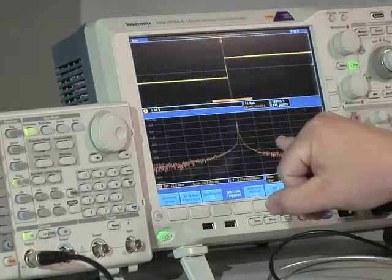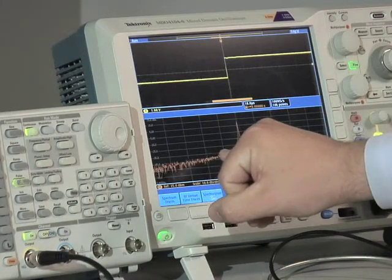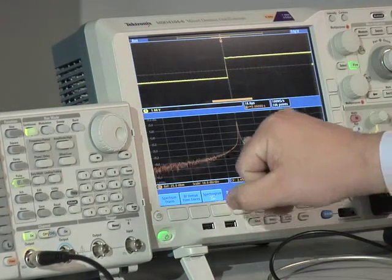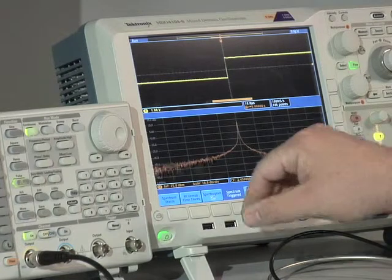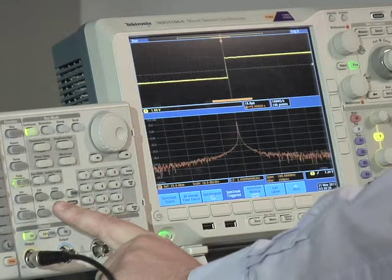And so now what we're looking at is the spectral purity of the power amplifier. So you can see the impact of the rising edge of that pulse and the consequences of that, that we have some spectral splatter.